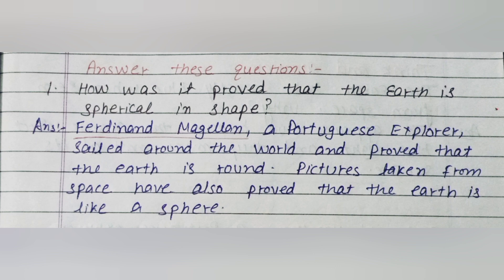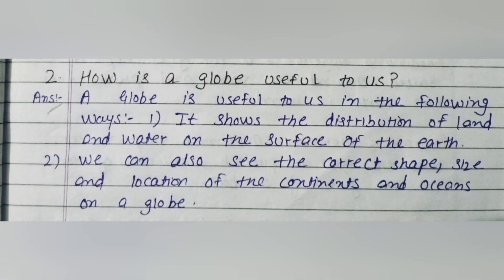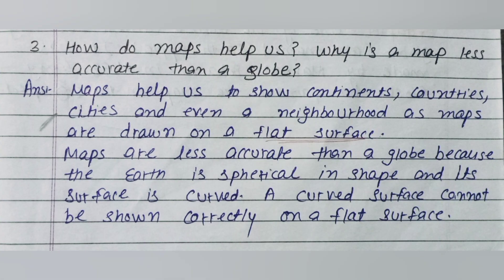Second question: How is a globe useful to us? Answer: A globe is useful to us in the following ways. First, it shows the distribution of land and water on the surface of the earth. Second, we can also see the correct shape, size, and location of the continents and oceans on a globe.